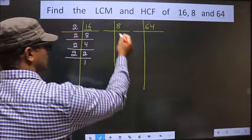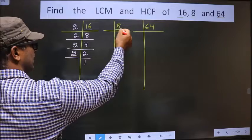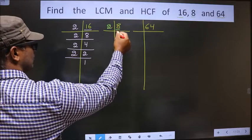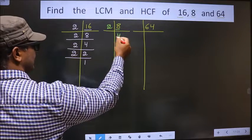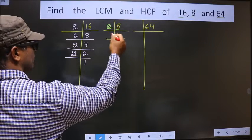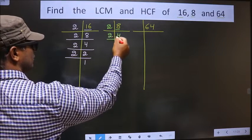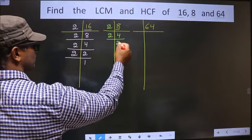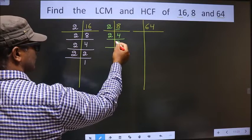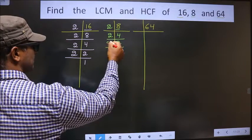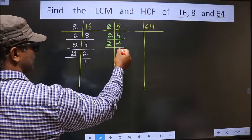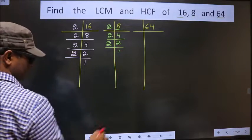Now, here we have 8. 8 is nothing but 2 fours. 4 is 2 twos. 2 is a prime number so we take 2 and 1.